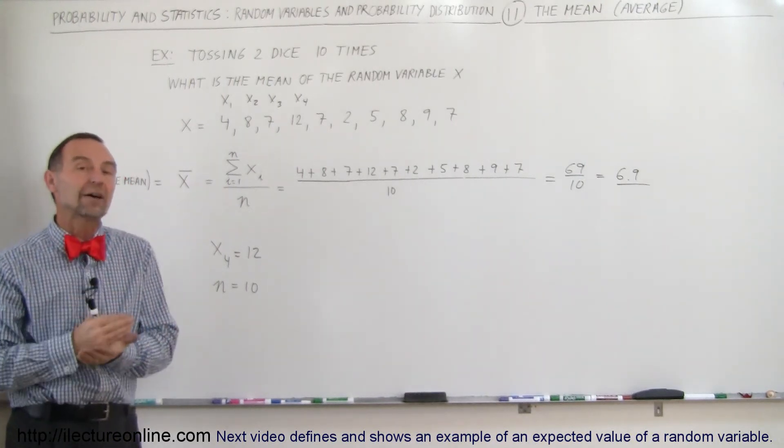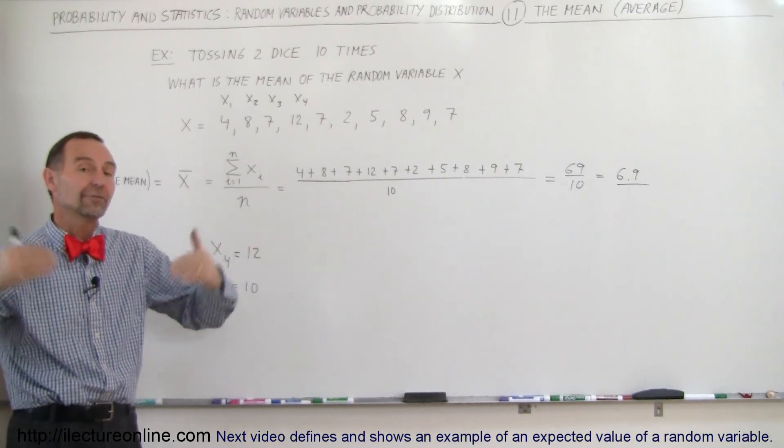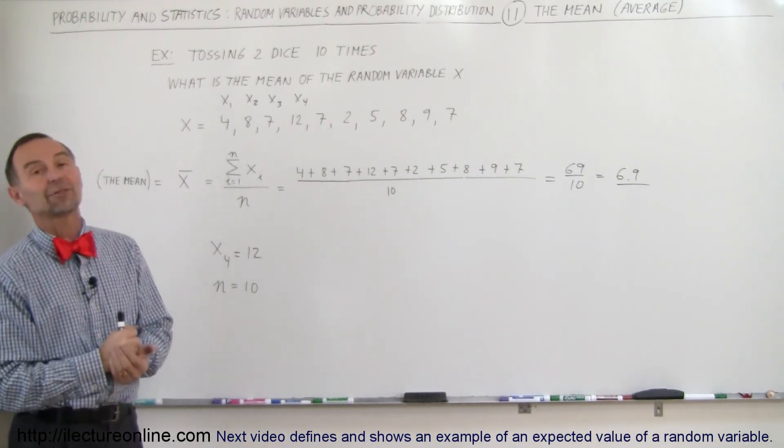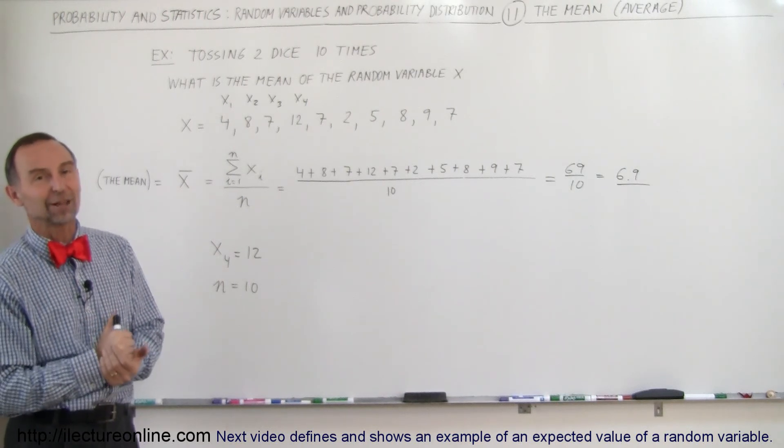But that's what we mean by the mean or the average. You simply add up all the numbers and divide it by the total numbers you have, and that gives you the average value or the mean. And that's how we do that.